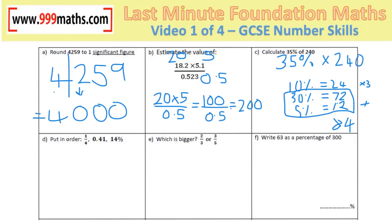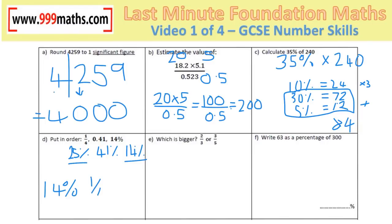Putting these in order: one quarter is 25%, 0.41 is 41%, 14% is already a percent. 14% is the smallest, 25% is the second smallest, and 41% is the largest.